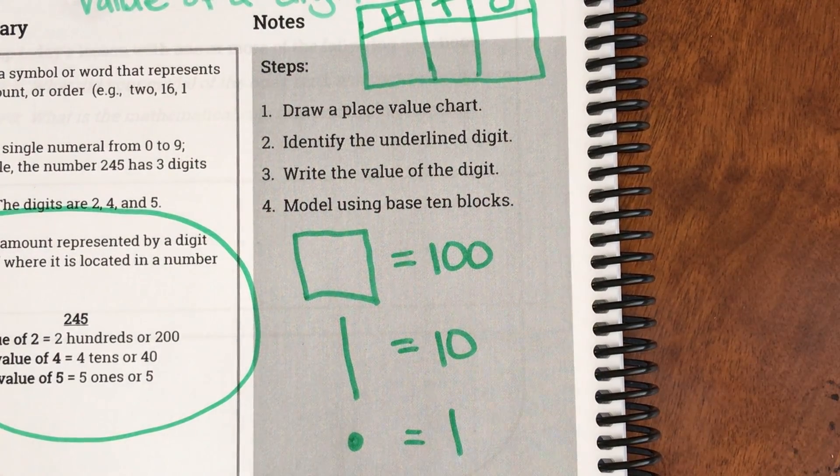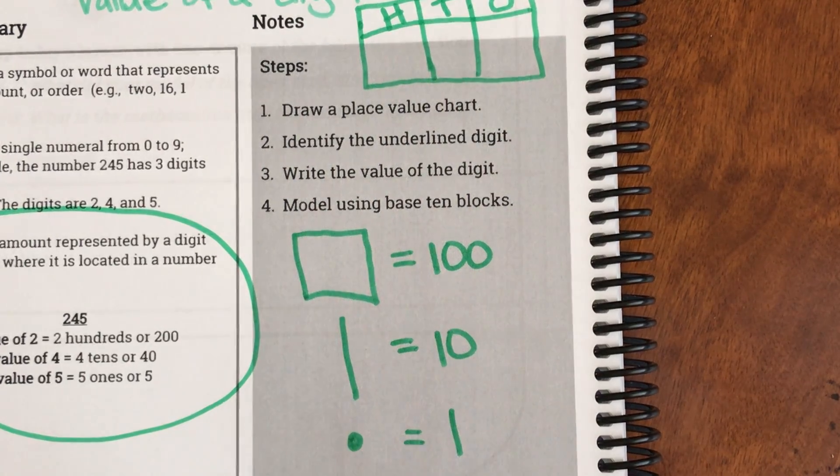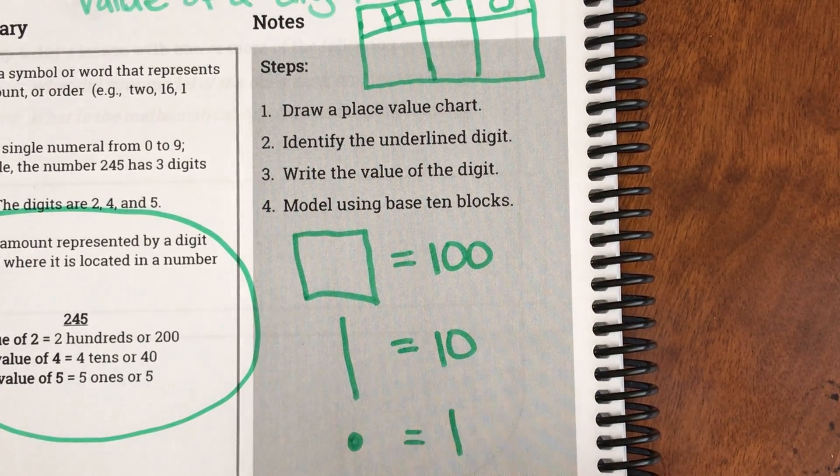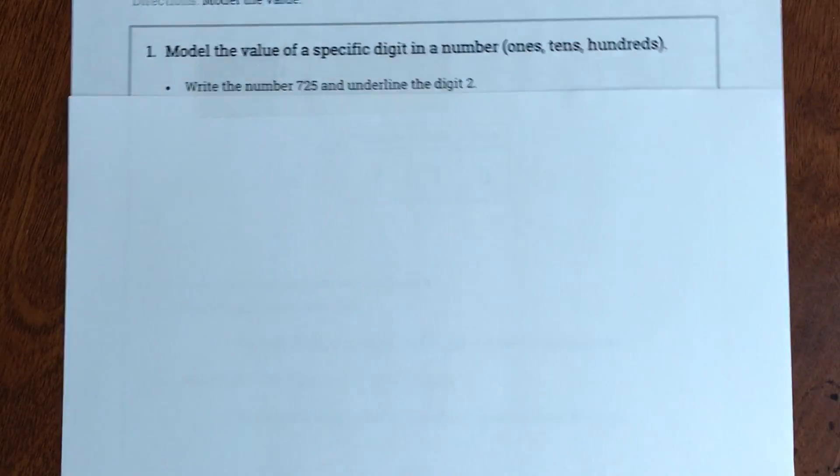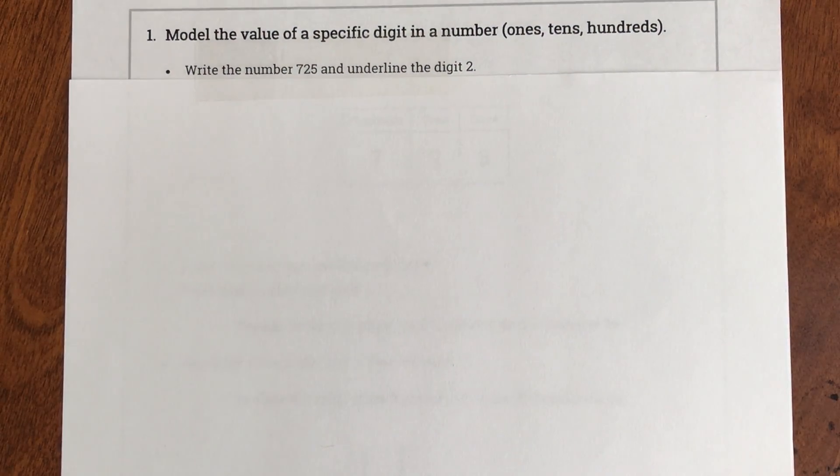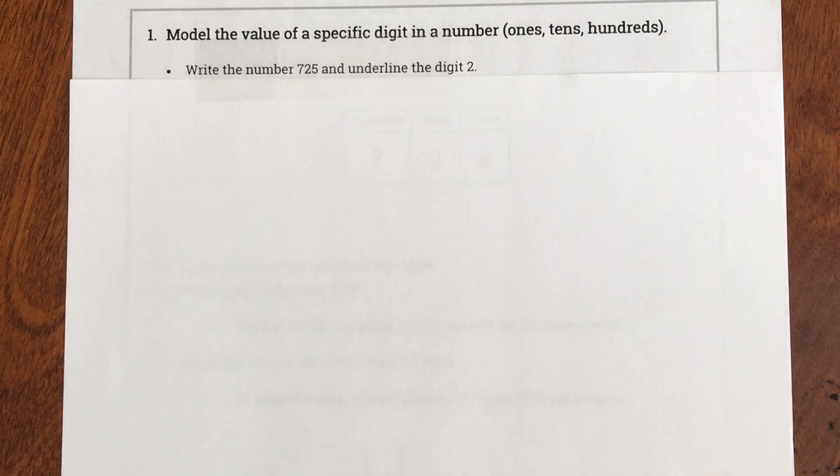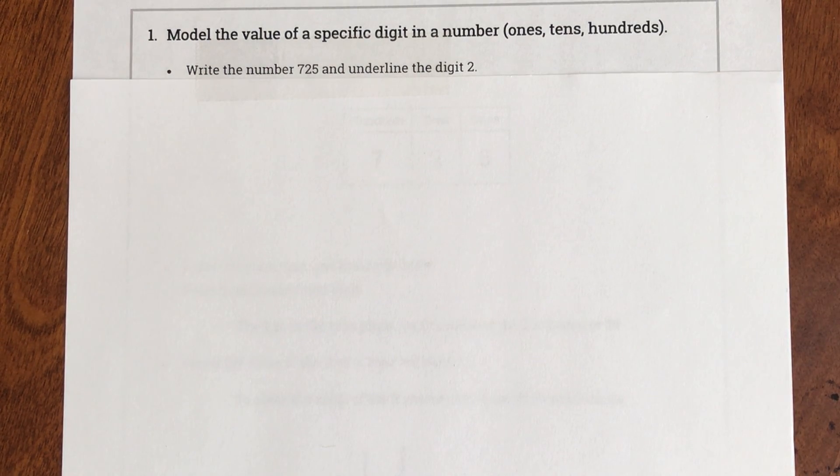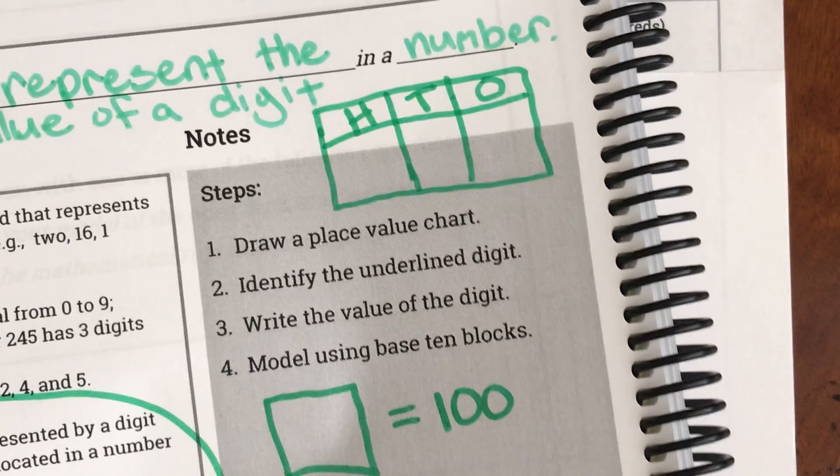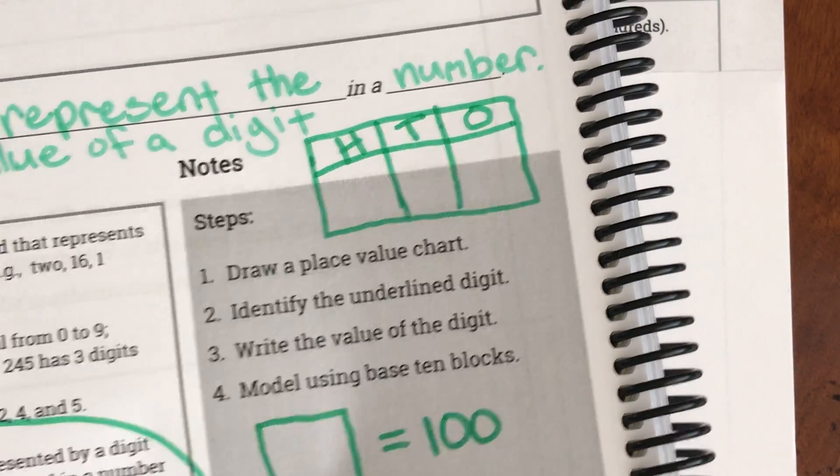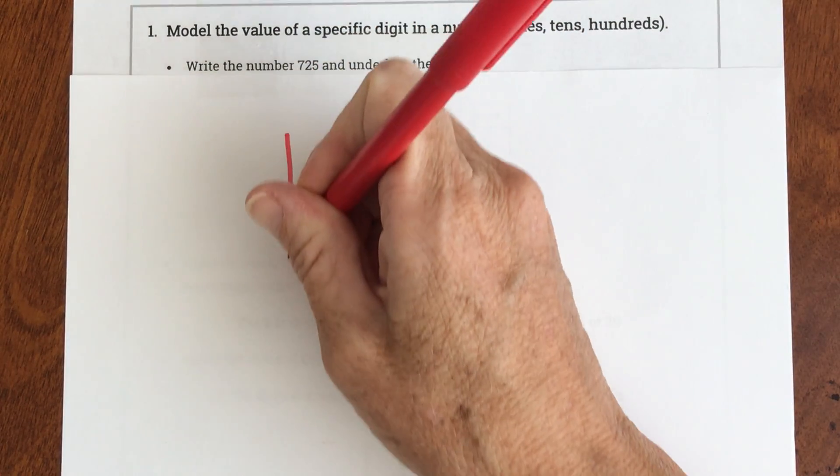Okay ladies and gentlemen I'm going to do some on my own that you can watch me. Here's my first problem. My first problem says model the value of a specific digit in a number: ones, tens, hundreds. Write the number 725 and underline the digit 2. Okay so if I look at my steps the first thing it says to do is to draw a place value chart. So I'm going to draw my place value chart.